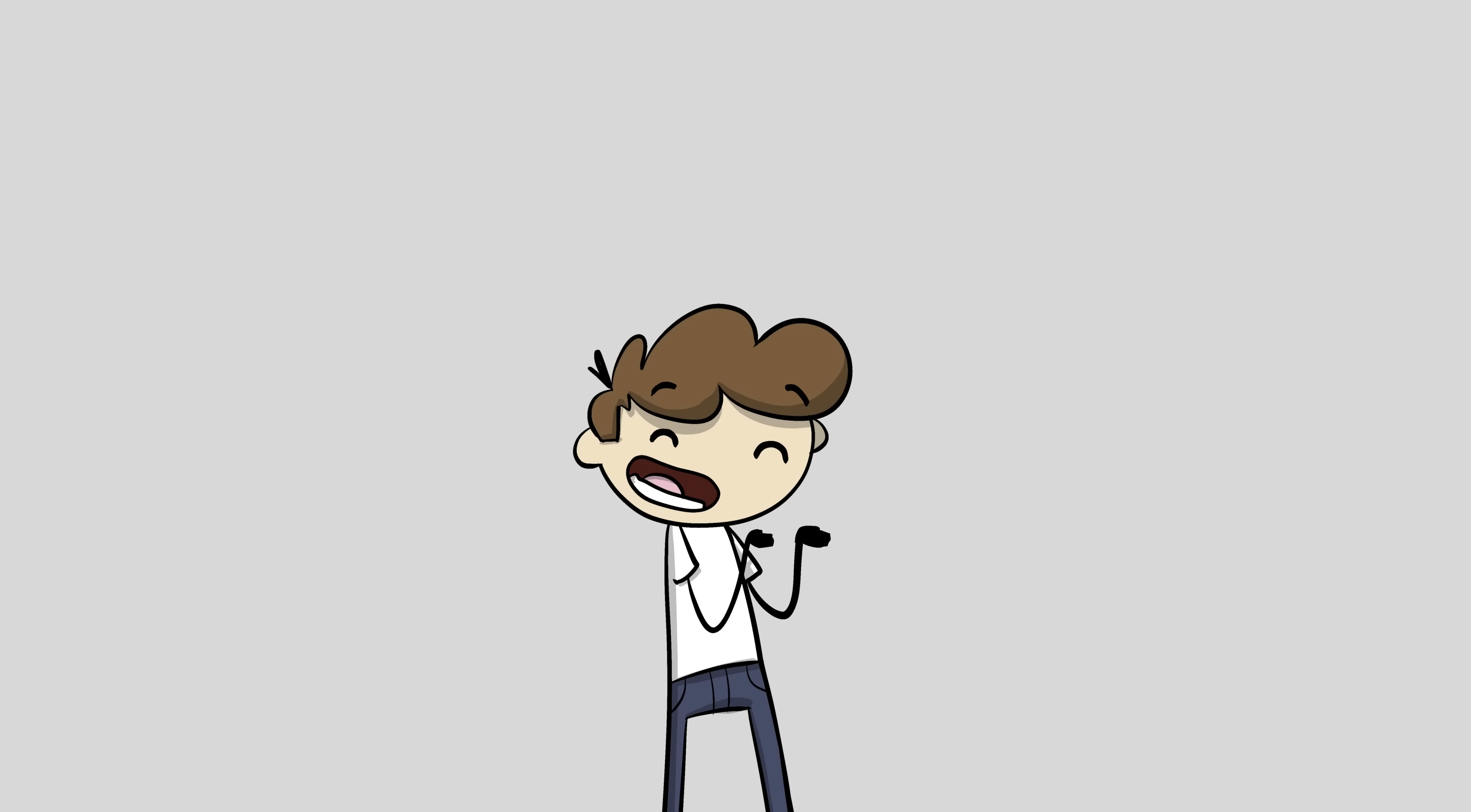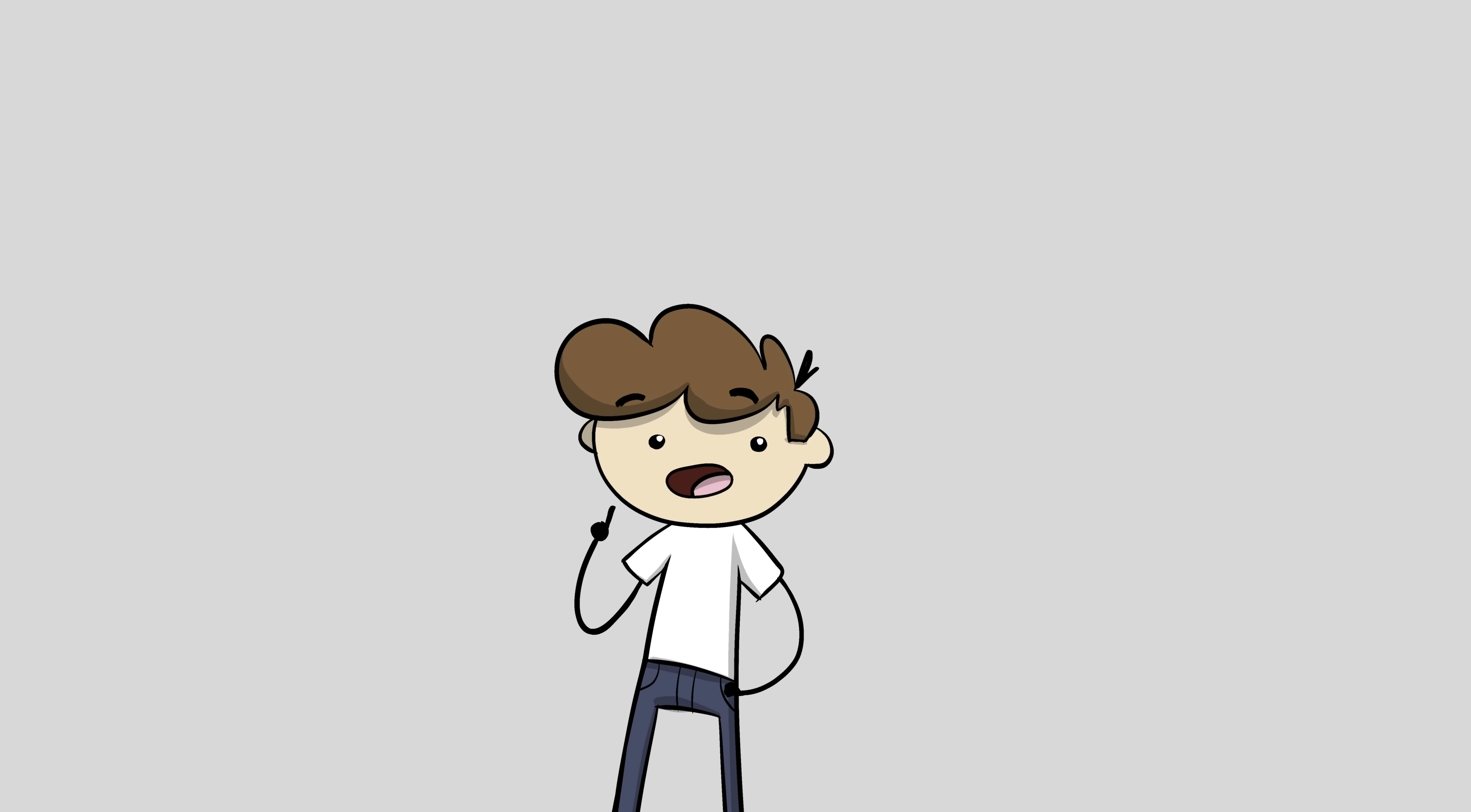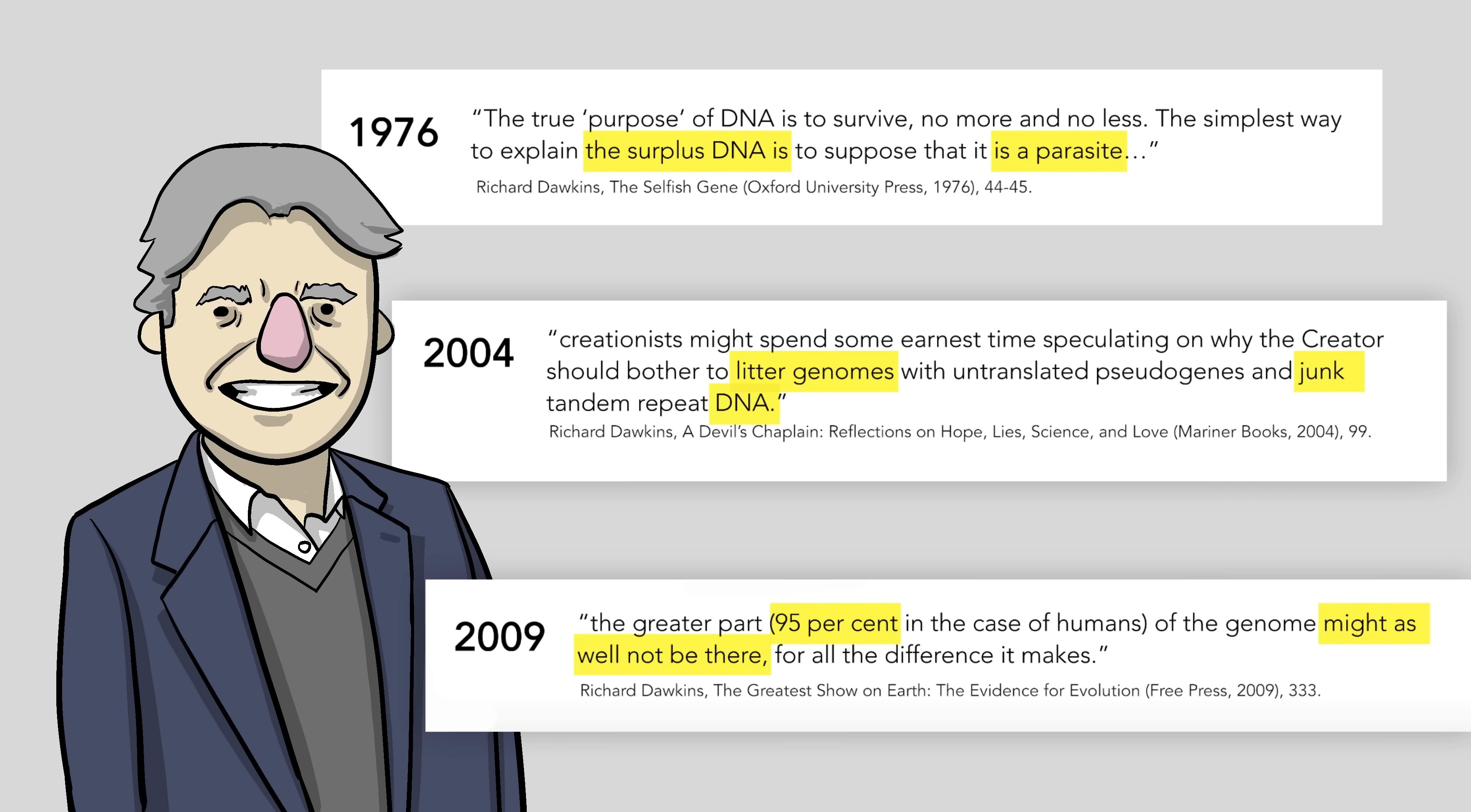Some evolution defenders go the opposite route. Instead of denying ENCODE's data, they embrace ENCODE, but then try to rewrite history and claim that evolutionary biologists predicted function for junk DNA all along. Richard Dawkins is a great example of this. Before ENCODE, he was quite confident in junk DNA.